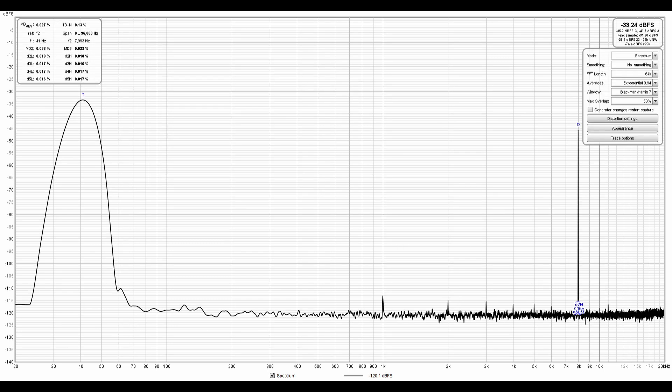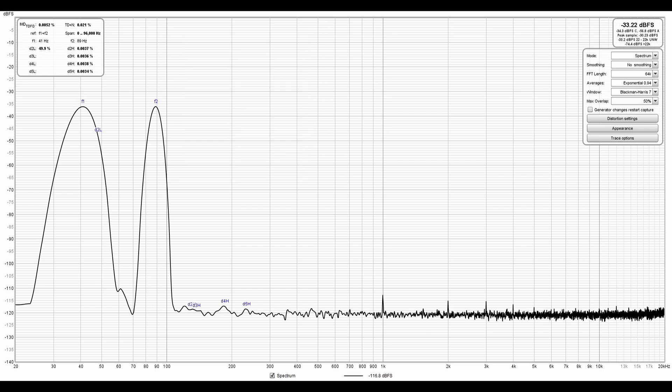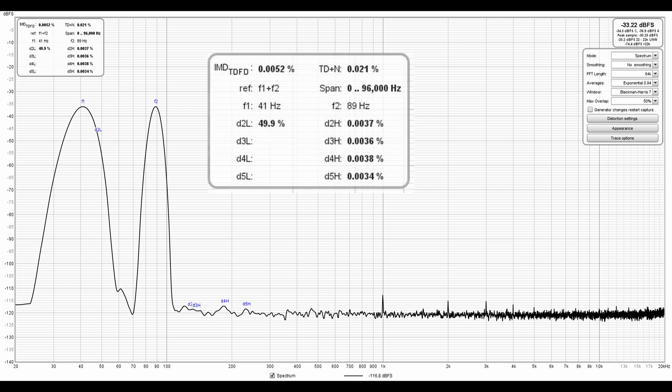I also figured out how to run IMD measurements, and what that measurement does is it injects two tones at the same time. In this case, it's a 41 hertz signal and an 8k signal. Once again, this is going into the 8 ohm dummy load, and once again this plot includes the distortion that the sound card has, so the amp is going to be lower. But once again, this is all very low and well below anything you'll be able to hear. And this is another IMD plot. This one uses two tones at a lower frequency, 41 hertz and 89 hertz, and once again very very low distortion. I got exceptional performance from this amplifier overall.